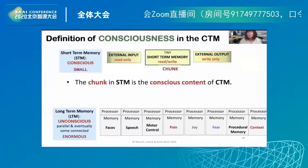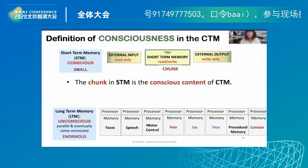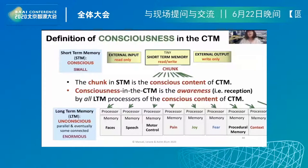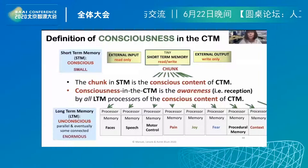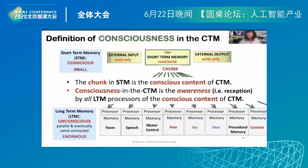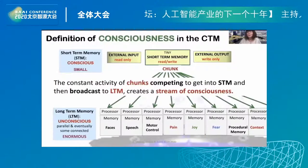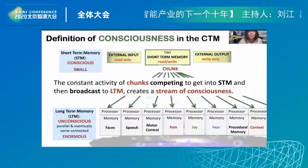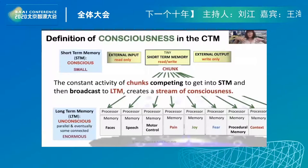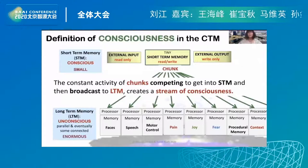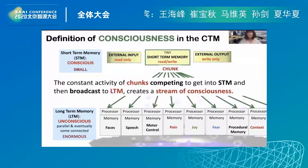Here is the definition of consciousness in the conscious Turing machine. Consciousness is the awareness or reception by all long-term memory processors of the conscious content of the CTM. Once the chunk (the conscious content) gets broadcast to all processors, the CTM becomes consciously aware of the content of short-term memory. This constant activity of chunks competing to get into STM and then broadcasting to the long-term memory processors creates a stream of consciousness — bubbling up and broadcasting down, constantly.